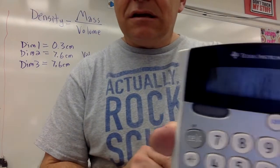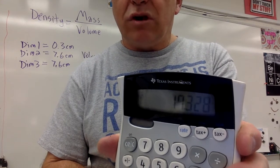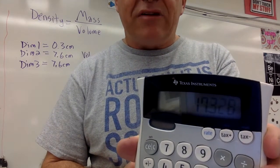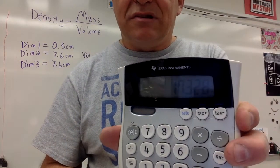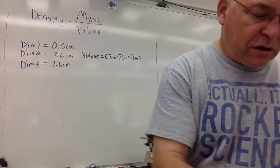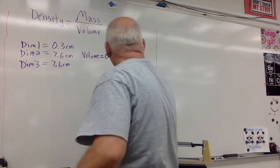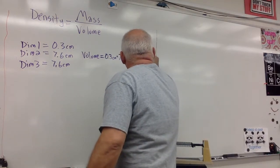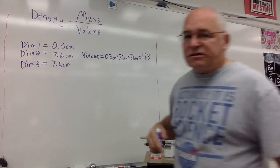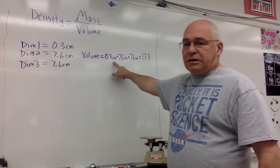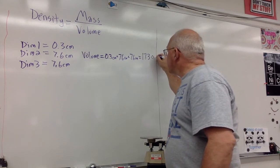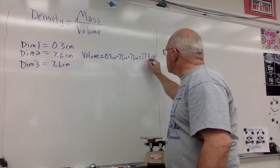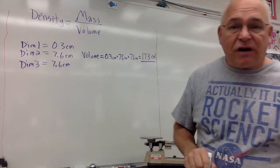17.328. Now our measurements are to 1 tenth, so we're going to round to 1 tenth. So this becomes 17.3. And then what are the units? Centimeters times centimeters times centimeters. That's centimeters cubed. There is our volume.